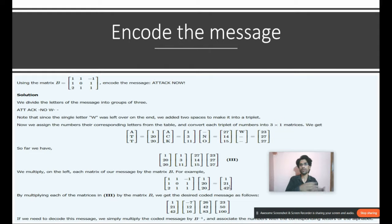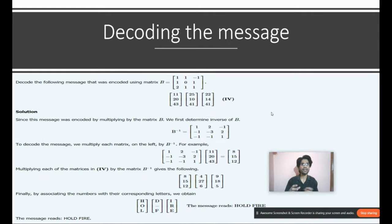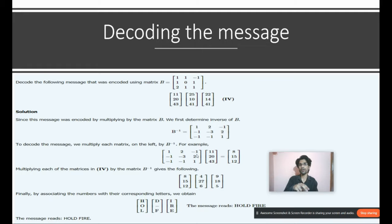That's the encoding part — the resulting matrix is the encoded message. For decoding, the process is the same: we take the inverse of the cipher matrix B. The inverse of B is [[1,2,-1],[-1,-3,2],[-1,1,1]]. That inverse matrix is multiplied by each encoded sub-part. Multiplying by [11,20,43] gives [8,15,12], then [4,27,6], and [9,18,5].